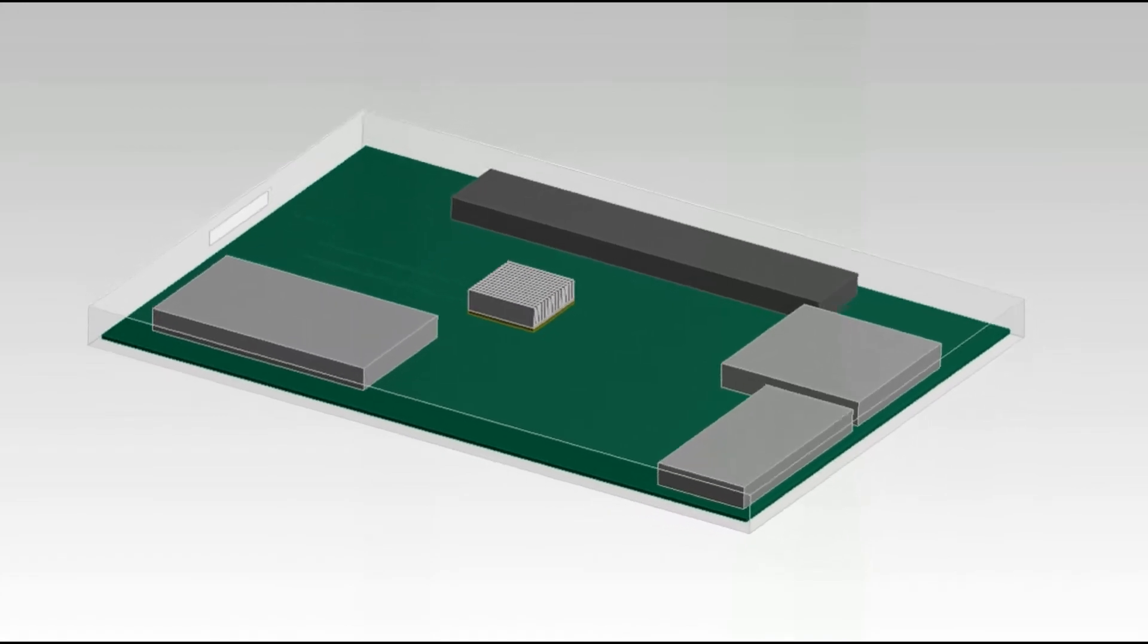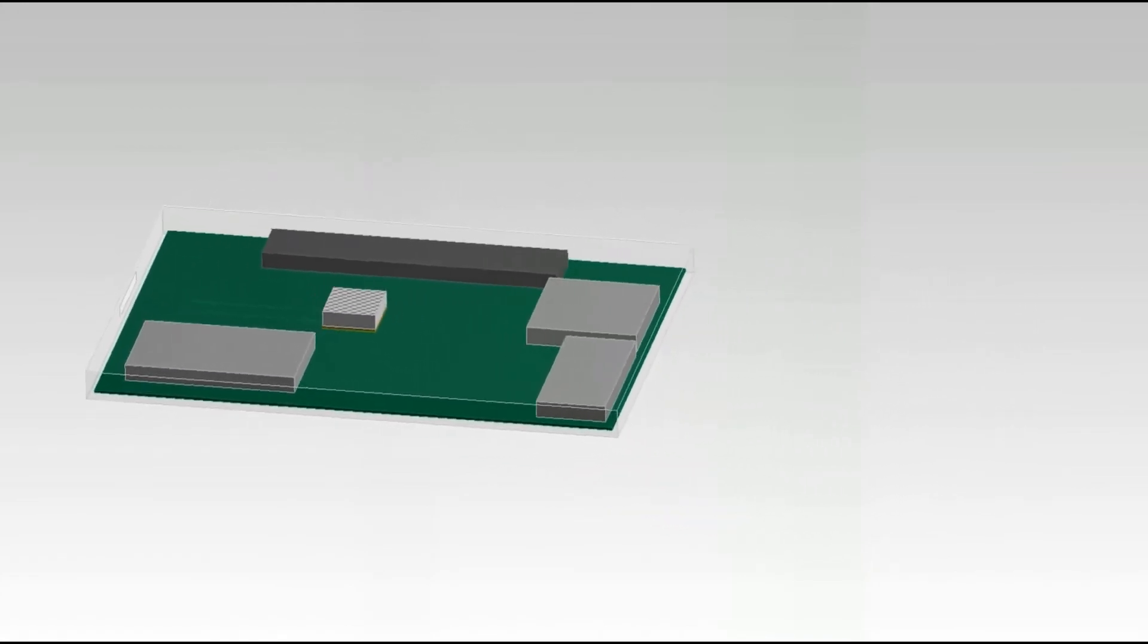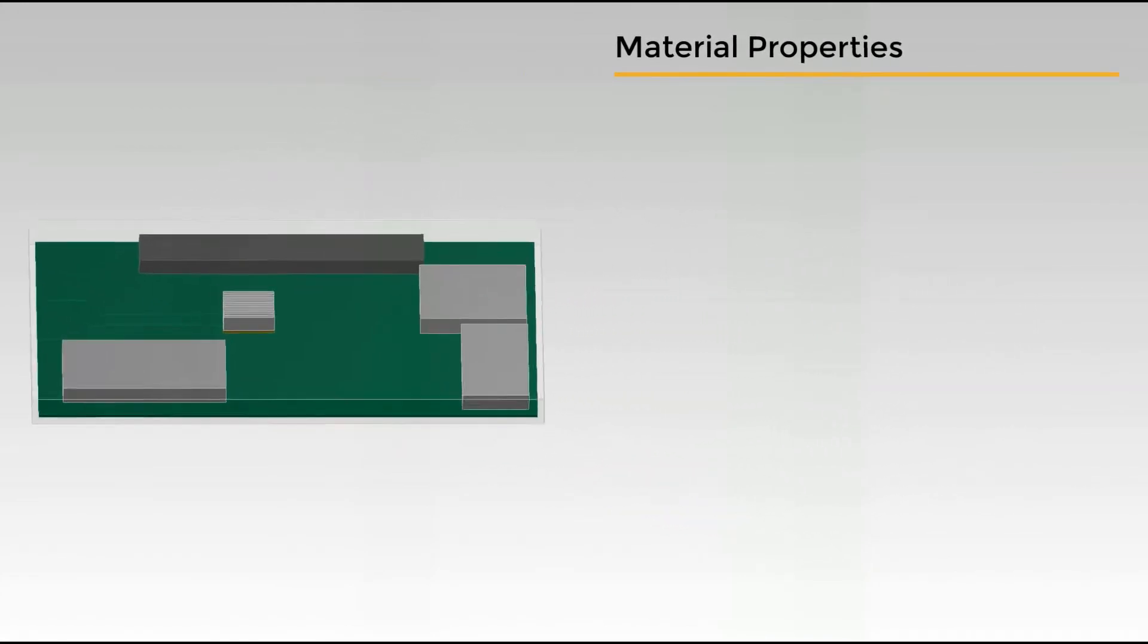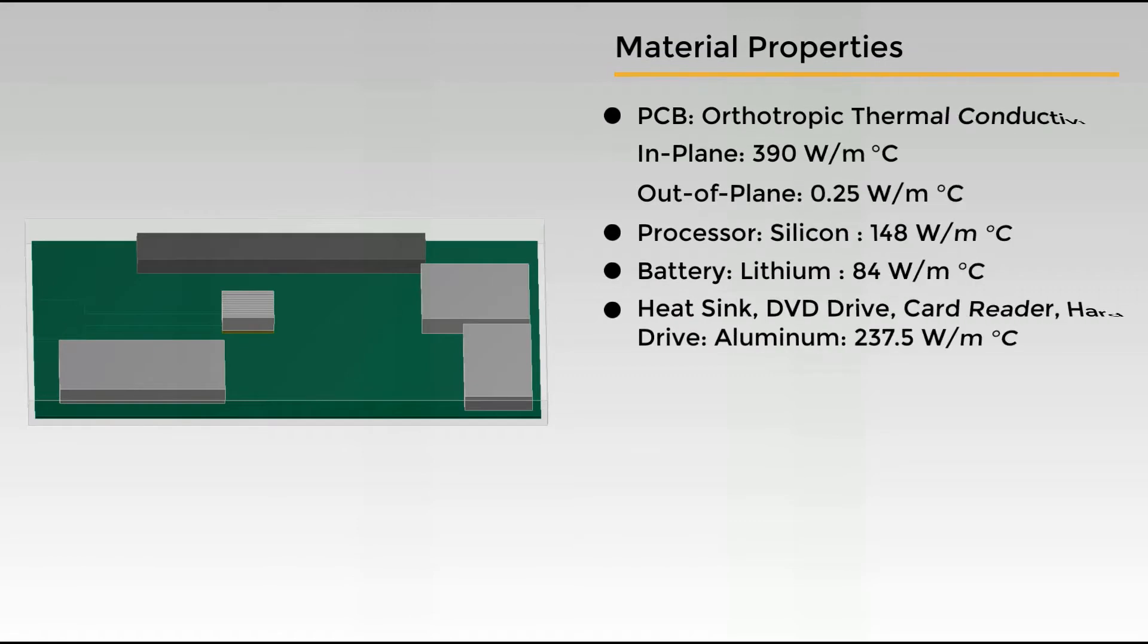In the laptop assembly, we'll have different material properties for different components. The PCB will have anisotropic thermal conductivity, in which the in-plane conductivity is dominant. All other materials will have isotropic thermal conductivity, and their values are presented here.